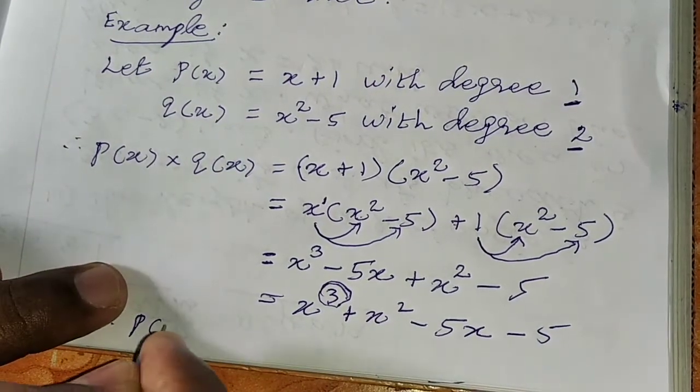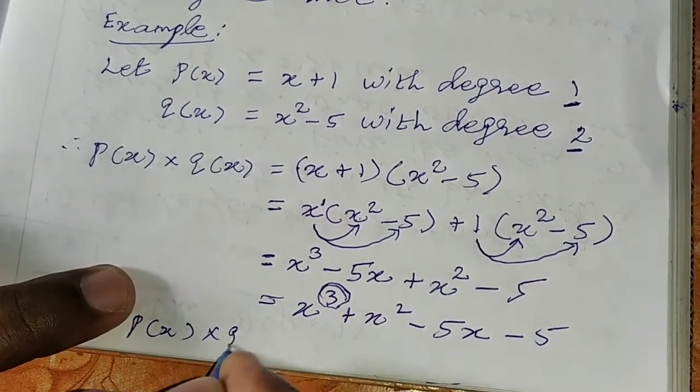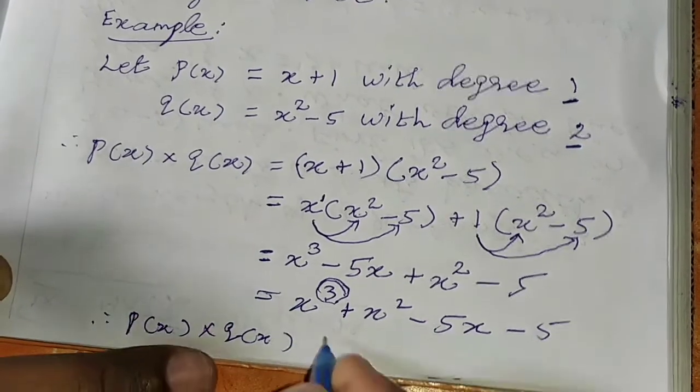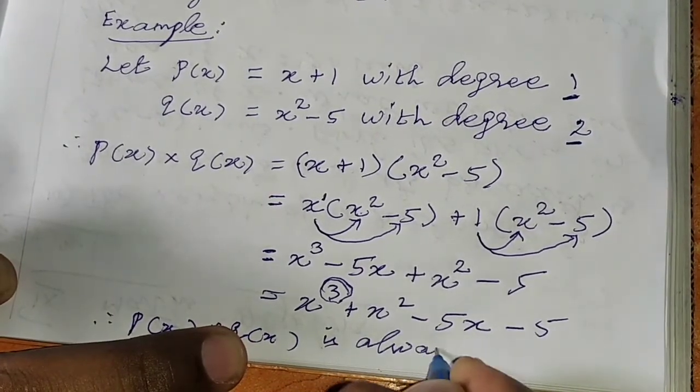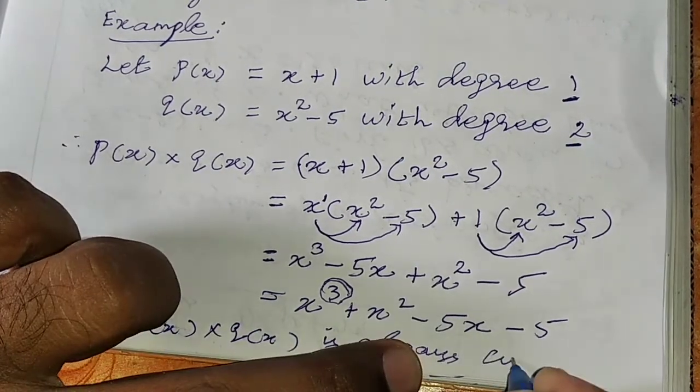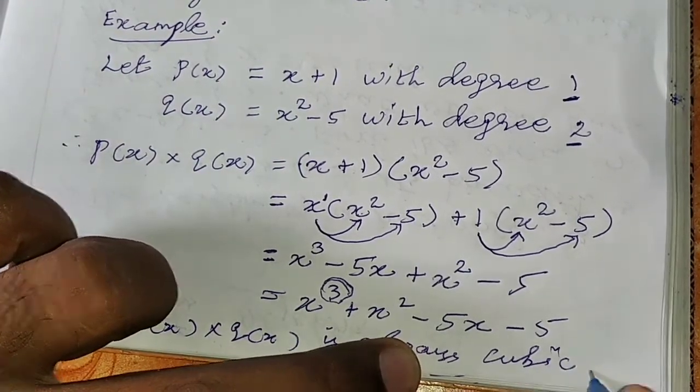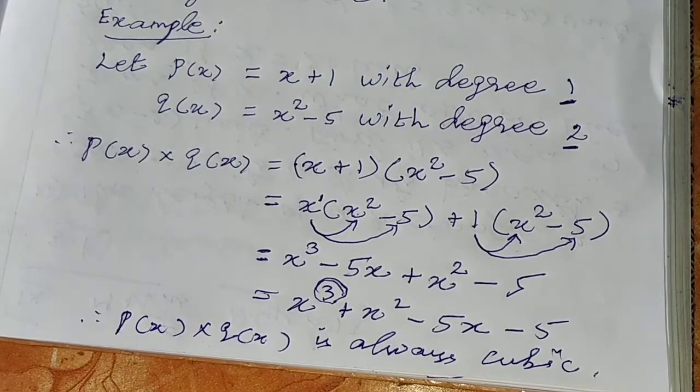Therefore, P of x into Q of x is always cubic. I have a cubic polynomial. That's all. Sum over.